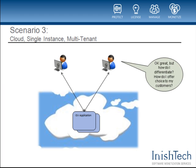But now you have a one-size-fits-all solution. You've created a new, more basic problem, which is how do you offer different versions of your service that support different subsets of features? In other words, how do you differentiate and provide your customers with variety and choice?